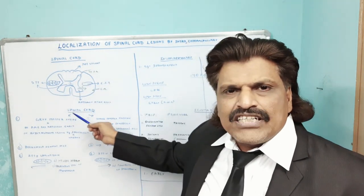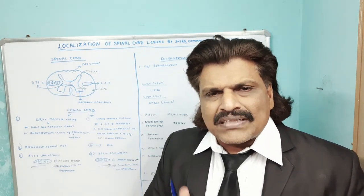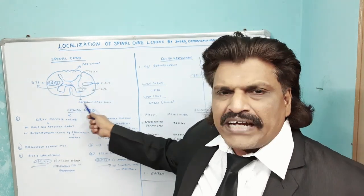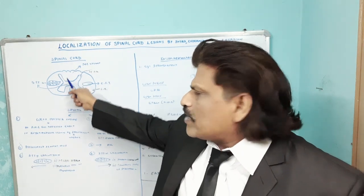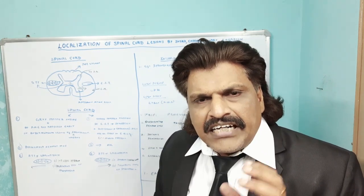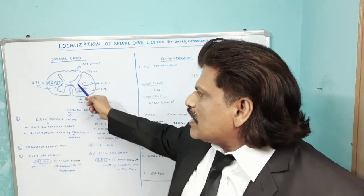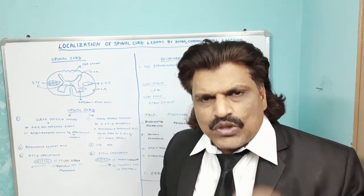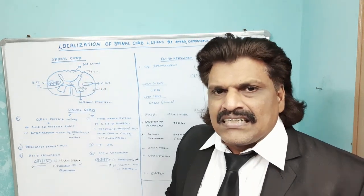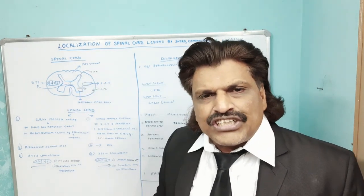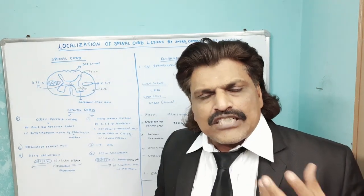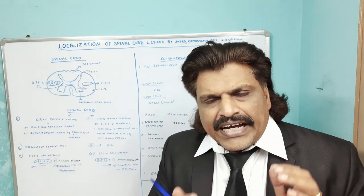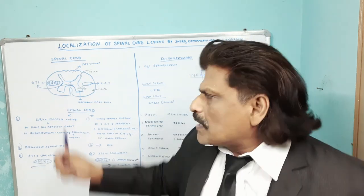This is the cross section of the spinal cord. The inner part is the gray matter, where the anterior horn cells and nuclei reside. The outside part is the white matter. So the spinal cord contains inner gray matter with nuclei and outer white matter with tracts — the posterior column tract carrying position, joint, and vibration sense; the corticospinal tract responsible for movements; and the spinothalamic tract carrying pain and temperature sensation.